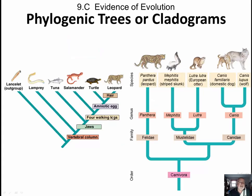Phylogenetic trees do the same sort of thing — time goes along this line and we have speciation events. To get to this branch, we had a vertebral column; the lamprey doesn't have one. Then we have a jaw, then four legs, then the amniotic egg, then hair. And the same sort of thing here: we start with a meat eater, then go to a cat, then to a panther, then to the Canidae, then to Canis, and then to the Mustelidae — the musk creatures that have those scent glands. These two are going to be more closely related than any one of them to the others. These two are more closely related, and this one is farthest removed because the speciation event was way down here.